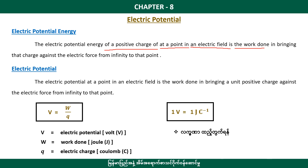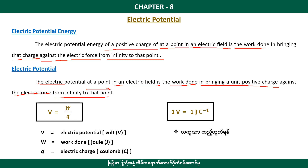The electric potential energy is the work done in bringing that charge against the electric force from infinity to the point. The electric potential at a point in an electric field is the work done in bringing a unit positive charge against the electric force from infinity to that point. So V is equal to W by q — this is the formula for electric potential.